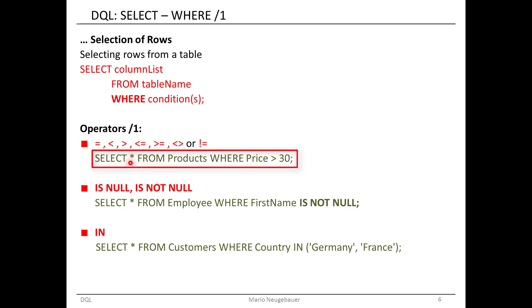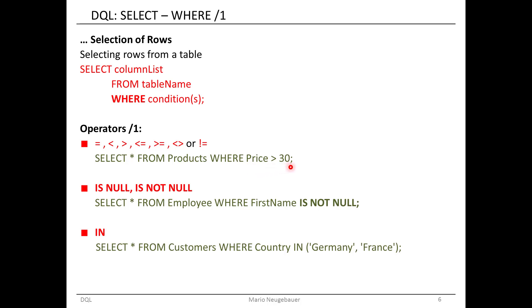A simple example: you select all columns from the table products, and the WHERE part comes with the condition where the price is larger than 30. You want to get only products where the price is larger than 30 — the more expensive products. That's something you can express with these conditions.